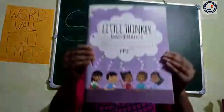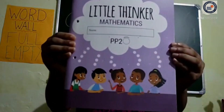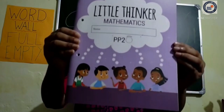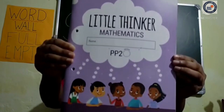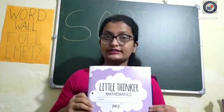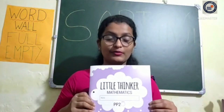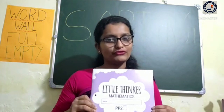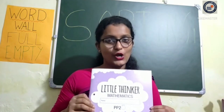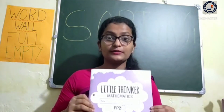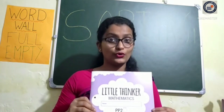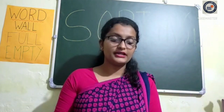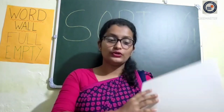This is the Little Thinker Mathematics book which I have with me. So all of you, please take out your Little Thinker Mathematics book and turn to page number 15. You have to turn the page slowly.